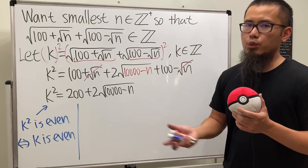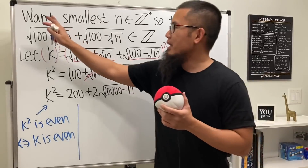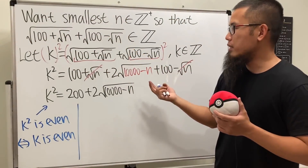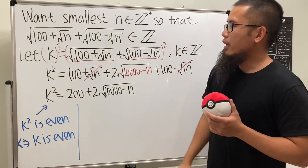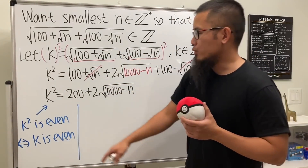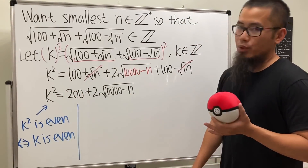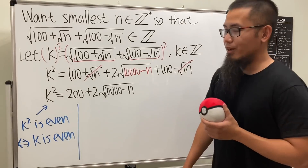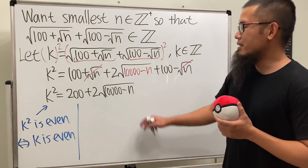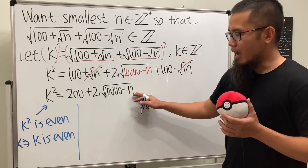Now, if n were equal to zero — the easiest case — we'd get square root of 100 plus square root of 100, which gives 20, and 20 squared is 400. But n has to be positive, so n = 0 is not allowed. The biggest k could be is 20, but that's only when n = 0.